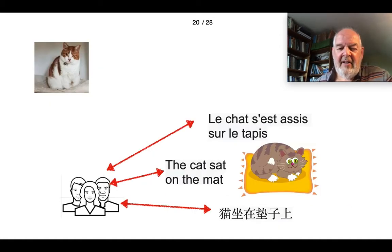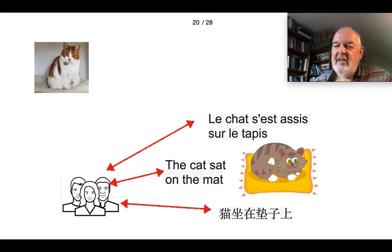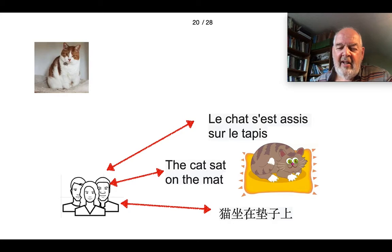Supposing the same observers are now discussing a cat sitting on a mat. Again, the conceptual cat on the mat isn't situated in some physical space — it's in some virtual conversational space. They can translate between different languages; they can agree on what the color of the mat is. But it is not in their brain — it's in their shared conversational space, a different space altogether.